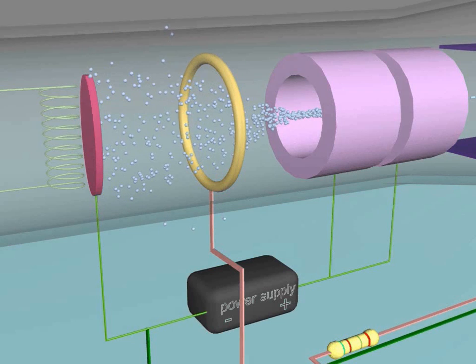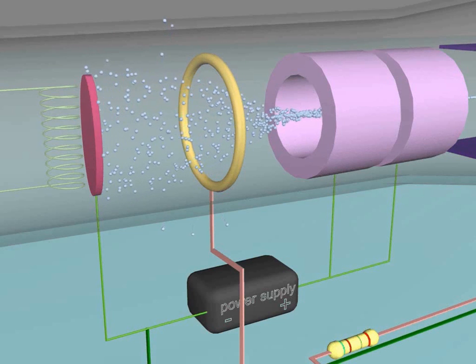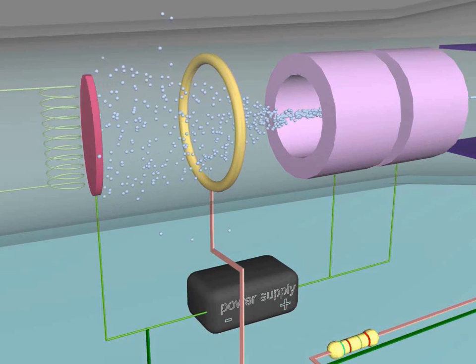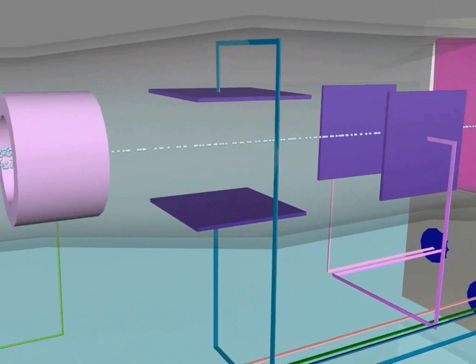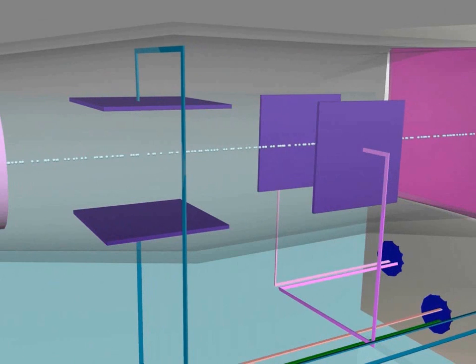This part produces electrons by the property of thermionic emission. The second part is the deflection system, and it causes the deviation of the electrons from its normal straight-line pathway according to the voltage applied to the plates.